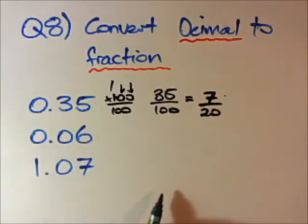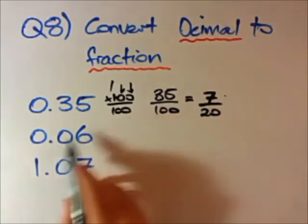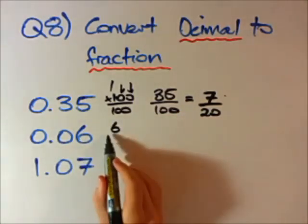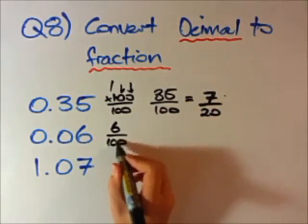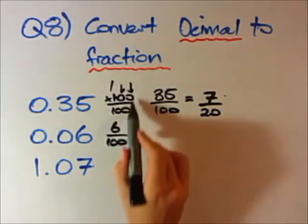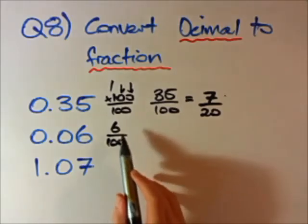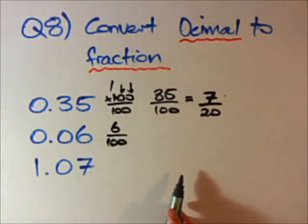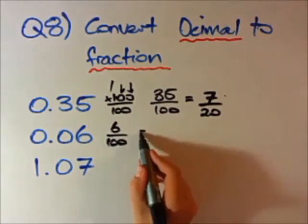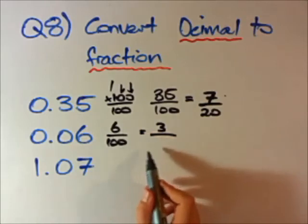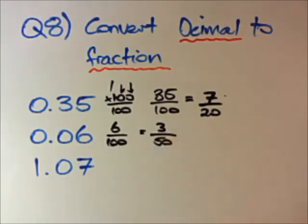Let's go to the second one. Times by 100 — or move the decimal place two spots — and we get 6. Because we times by 100, we also divide by 100, giving us 6 over 100. Now simplify: 2 goes into 6 three times, and 2 goes into 100 fifty times, so the simplified fraction is 3 over 50.